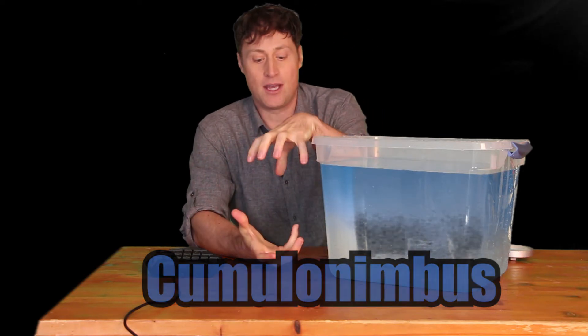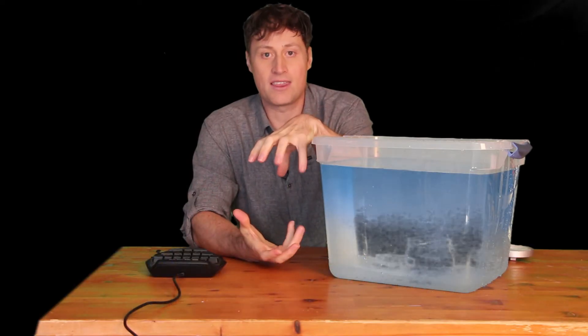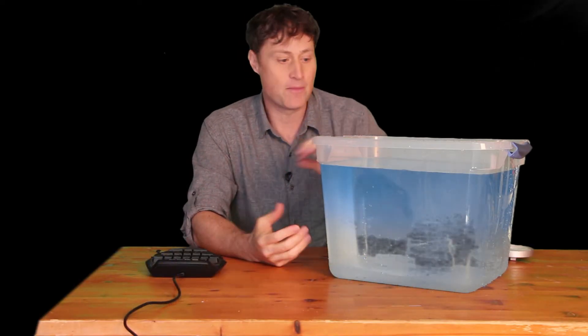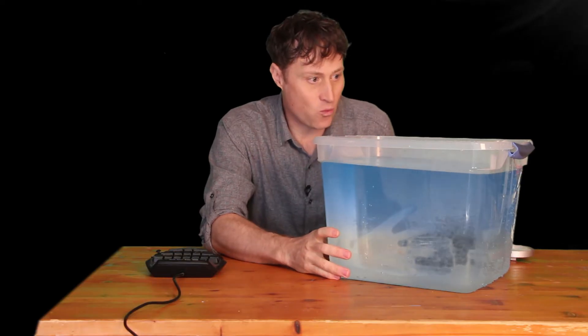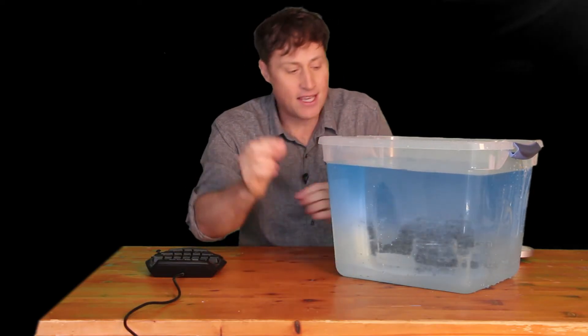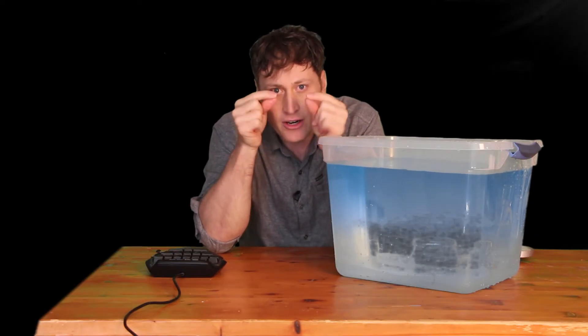So a cumulonimbus cloud is what we think of as a thunderstorm cloud. And what happens then is what makes the rain is the molecules of water start to come together and they start to form larger and larger drops.